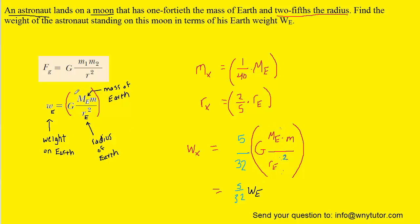We can replace the expression in parentheses with the weight on Earth, since that expression is equivalent. We've concluded the problem. The weight on the moon equals 5/32 times the weight on Earth. This would be the correct answer.